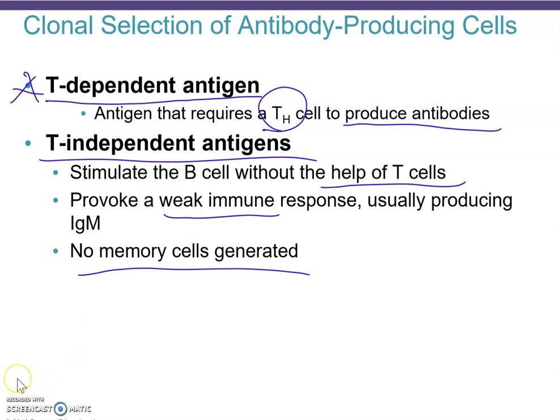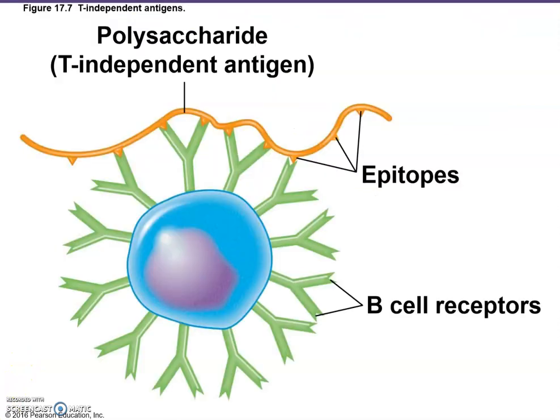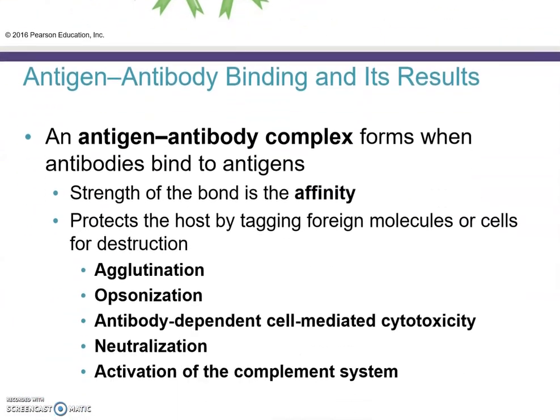Here's a diagram showing T-independent antigens, which represent a weak immune response. You have your epitopes and B cell receptors but no helper T cell or antigen-presenting cell is needed. This is not the preferred method.